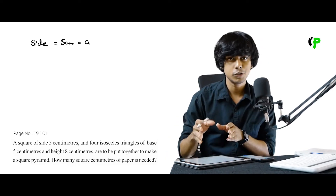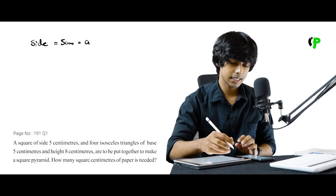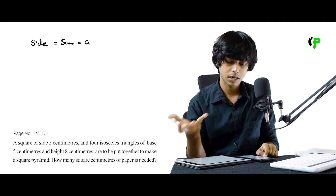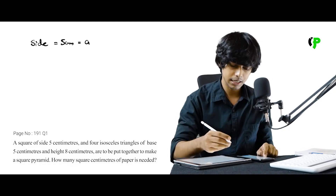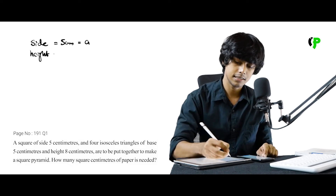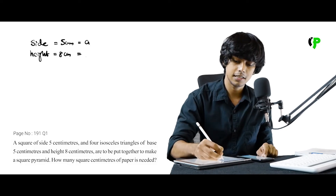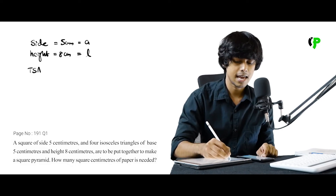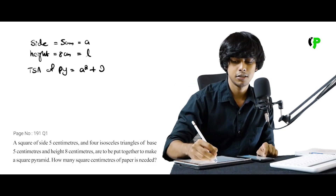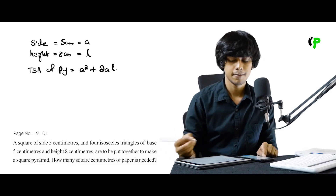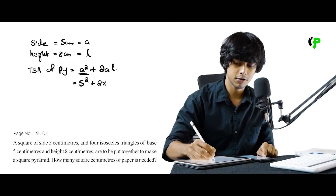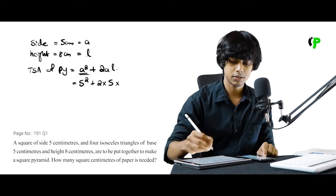The height given is 8 cm. Since the height here is the slant height, L equals 8. Now applying the formula: TSA of pyramid equals A squared plus 2AL. That gives us 5 squared plus 2 into 5 into 8.